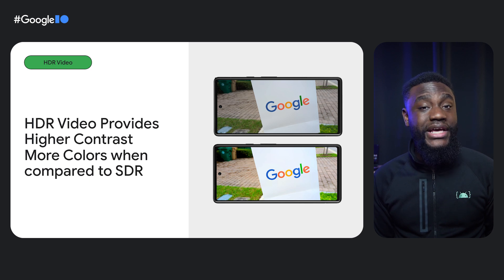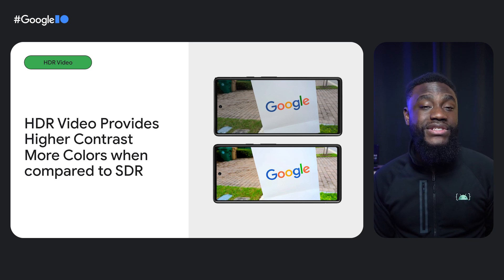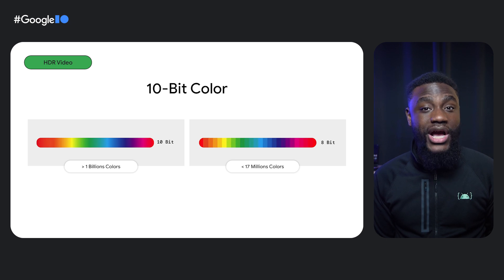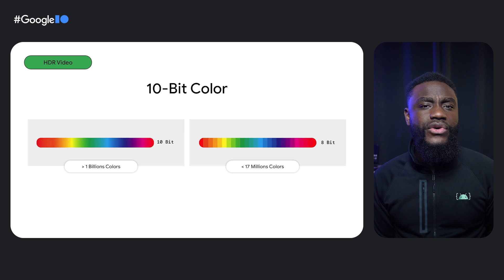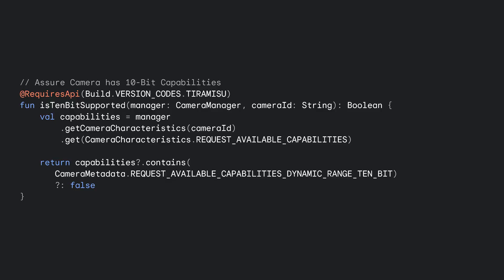In Android 13, we introduced HDR video capture, which provides higher contrast and more colors to encoded video. Your camera capture will be able to produce much brighter videos and more saturated colors compared to SDR. With HDR video capture comes 10-bit color capture as well, which enables you to capture a little over 1 billion colors instead of just shy of 17 million. This should make colors in video smoother and more consistent and avoid the dreaded banding. You can use a function like this to check if the device supports 10-bit output. Using the Camera Manager, call the GetCameraCharacteristics function with the key REQUEST_AVAILABLE_CAPABILITIES. From there, we can check if REQUEST_AVAILABLE_CAPABILITIES_DYNAMIC_RANGE_10_BIT exists in the camera's capabilities.